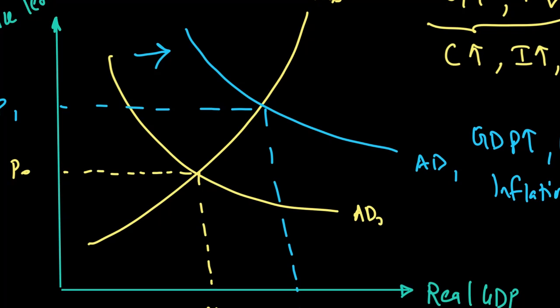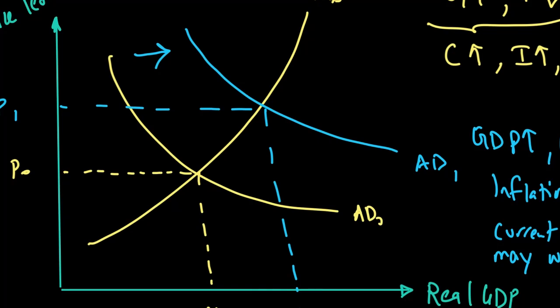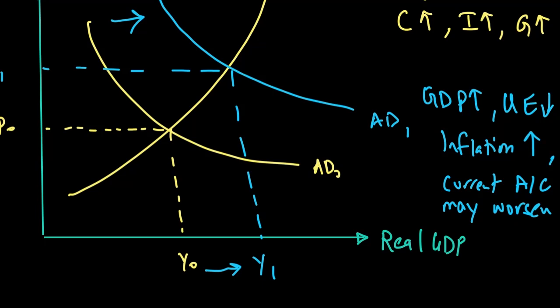At the same time, we may also say that the current account of the balance of payment may worsen when our AD curve is shifting to the right. And why is that so? Well, because when the GDP is rising, incomes are rising, there could be a possibility of an economy spending more on foreign goods or imported items. And that can run into current account deficit. And if that happens, then we can say there is a tradeoff when we look at our expansionary fiscal policy, because at one point we are causing the GDP to go up and unemployment to go down. But at the same time, the other macroeconomic goals of inflation to go up and current account deficit may worsen as a result of the rise in AD.